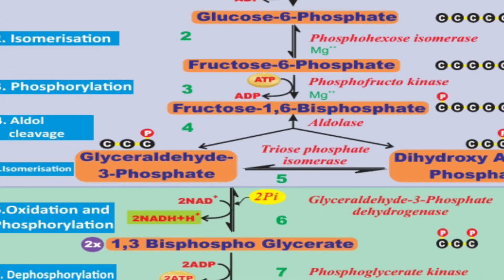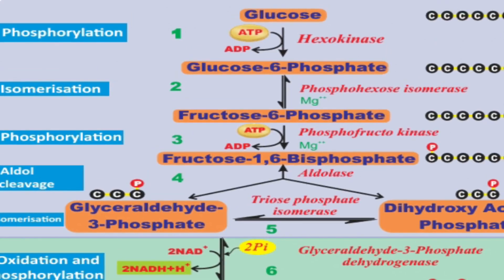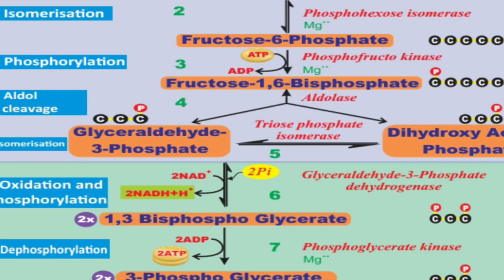In the third step, phosphorylation occurs again. Fructose 6-phosphate is converted to fructose 1,6-bisphosphate. One phosphorus from ATP is added to fructose 6-phosphate. The product is fructose 1,6-bisphosphate. The enzyme involved is phosphofructokinase.